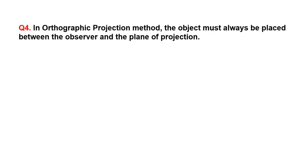In orthographic projection method, the object must always be placed between the observer and the plane of projection. A. True, B. False.